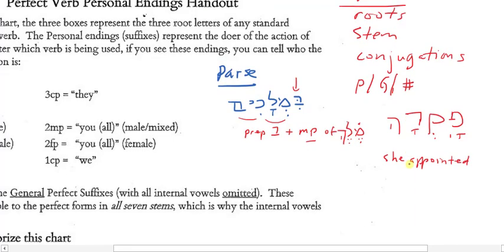So, root means what are the three consonants. What are the three consonants here? pe, kov, dalit. stem?